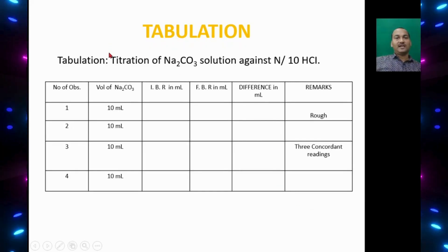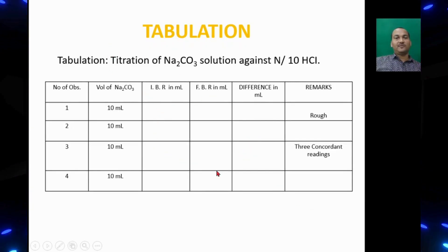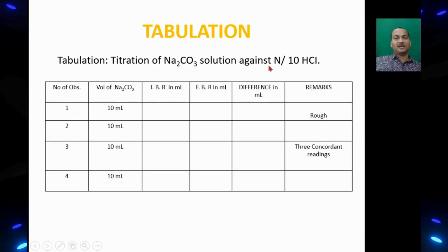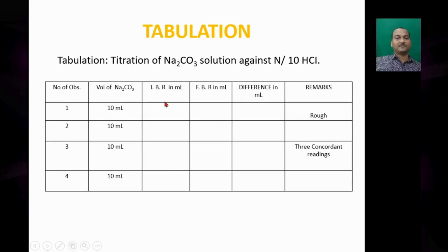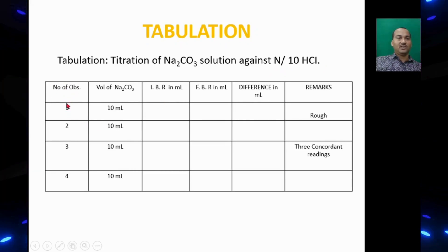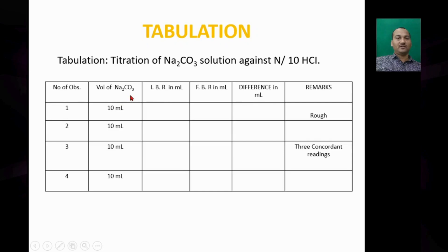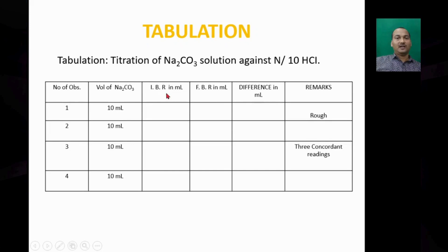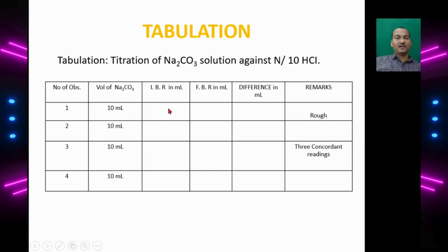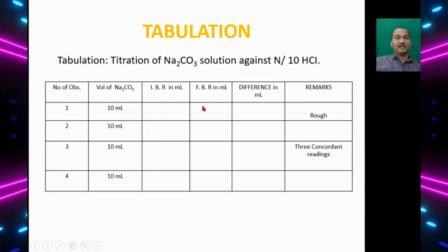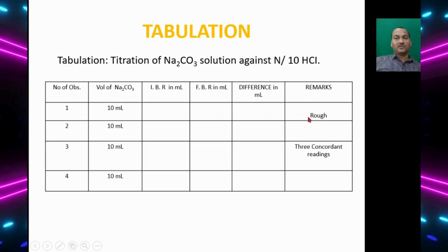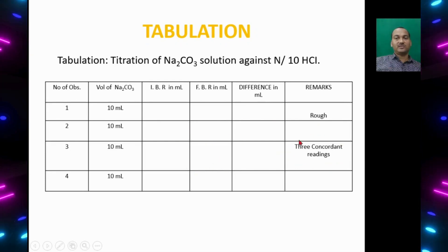Write your titration values in tabular form. Title: Titration of sodium carbonate solution against N by 10 HCl solution. Write the number of observations 1, 2, 3, 4 and the volume of sodium carbonate taken, 10 ml each time. Write down initial burette reading and final burette reading at the endpoint of titration and get the difference. This will be the rough reading and next three titrations will give three concordant readings.